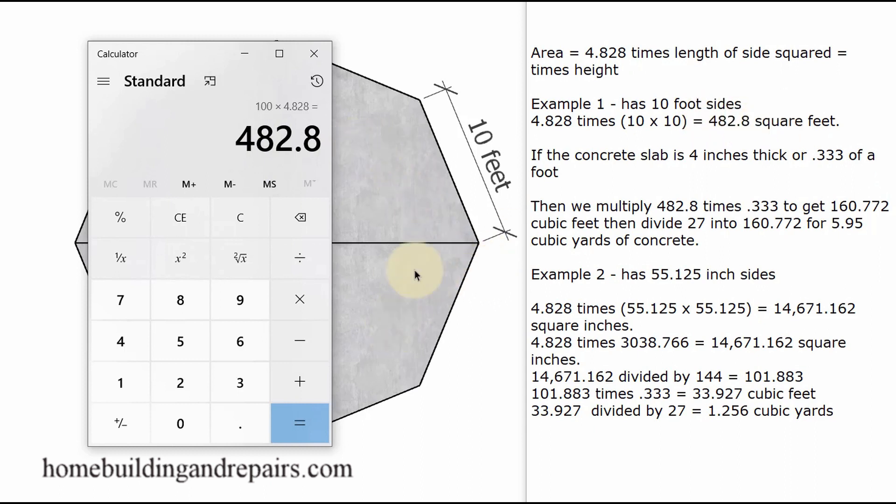So that would look like this: 10 times 10 equals 100. Then we're going to multiply 100 times 4.828 to get 482.8 square feet. This is the area, the surface area of the octagon. And in order to create the thickness of the slab, 4 inches for example, we're going to need to divide 4 into 12 to get the decimal.